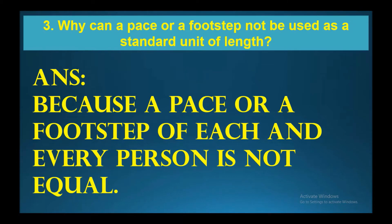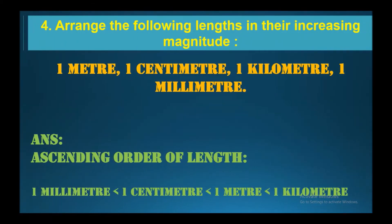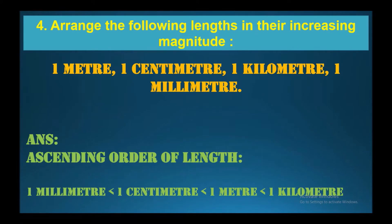The fourth question: arrange the following lengths in increasing order of magnitude — one meter, one centimeter, one kilometer, one millimeter. The ascending order of length is: one millimeter, then one centimeter, then one meter, and the largest is one kilometer.